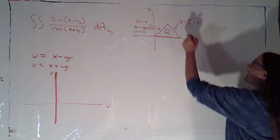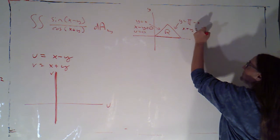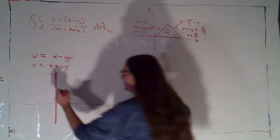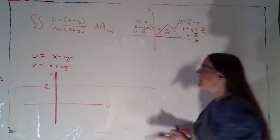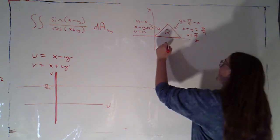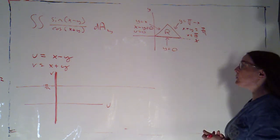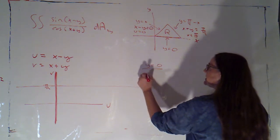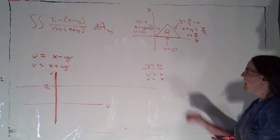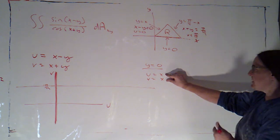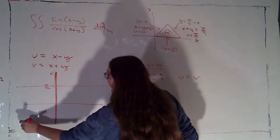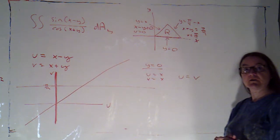This line was y equals pi over 4 minus x. Notice that means x plus y is pi over 4 — lovely — so v equals pi over 4. That gives us a horizontal line at height pi over 4 as part of the boundary of region S. The third boundary is the x-axis, given by y equals zero. If y equals zero, then u equals x minus zero and v equals x minus zero — that gives a parametric curve where u and v are the same, which is the line u equals v in the uv-plane, the line of slope 1 through the origin.